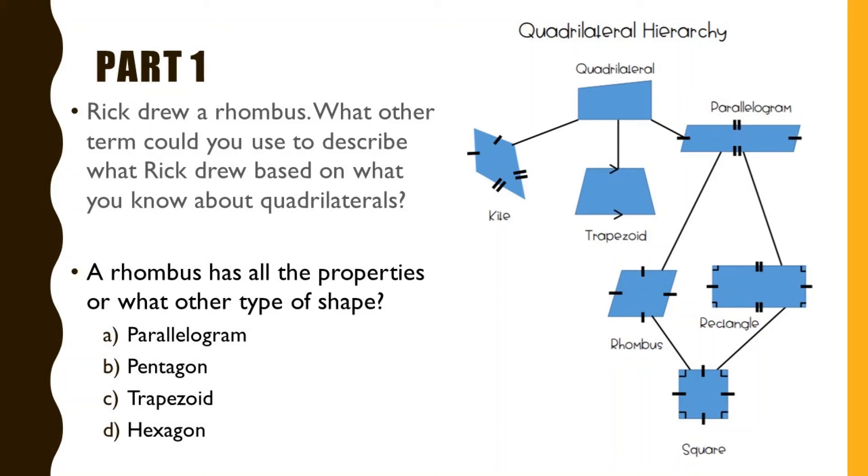Rectangles also have four right angles, which is not a property of a rhombus. So another way to rephrase this question is, a rhombus has all the properties of what other type of shape? Use the hierarchy to think about that answer.